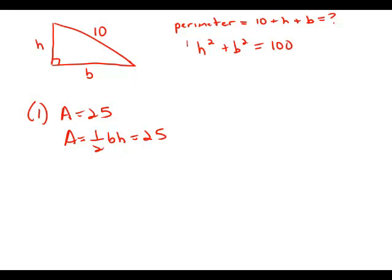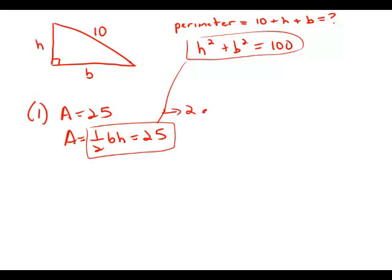Here we have one equation with two unknowns, and here we have another equation with the two unknowns. When we combine these two, we have two equations with two unknowns, and that's enough to solve. So this statement by itself is sufficient. This statement would allow us to solve for h and b and allow us to find the perimeter.